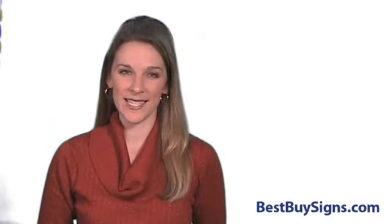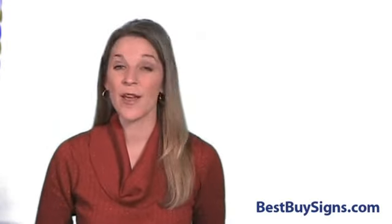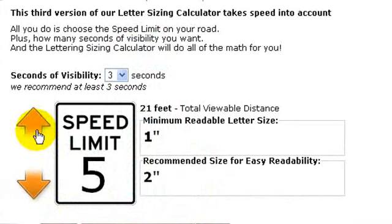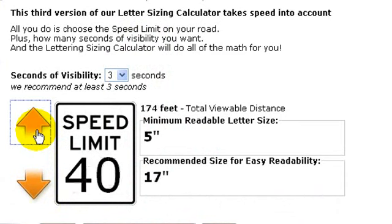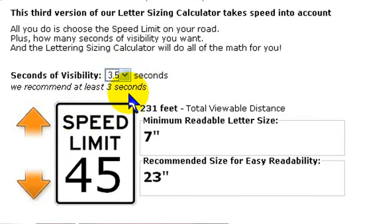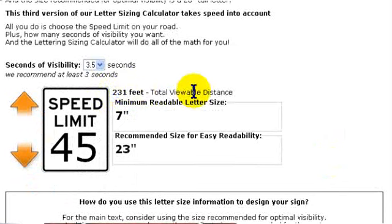Now here's the really cool sizing calculator for signs going out by the road. This calculator takes speed into account. For example, let's suppose the speed limit on your street is 45 miles per hour and you want your message to be readable by passing motorists for at least three and a half seconds. Then you'll instantly see that you need at least 7 inch tall letters or for easy readability 23 inch tall letters. This 231 feet total viewable distance is a reference point calculated from the rate of speed and the number of seconds you select.